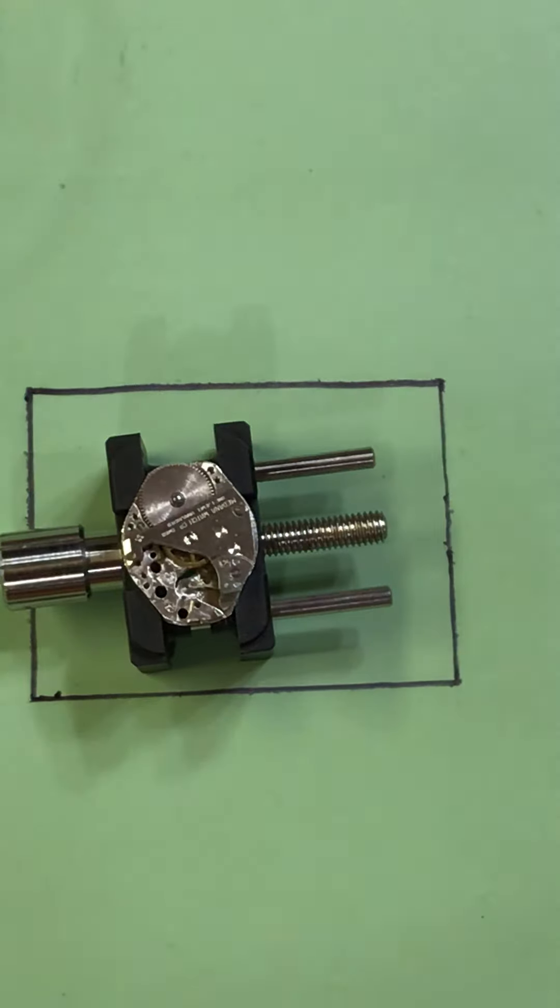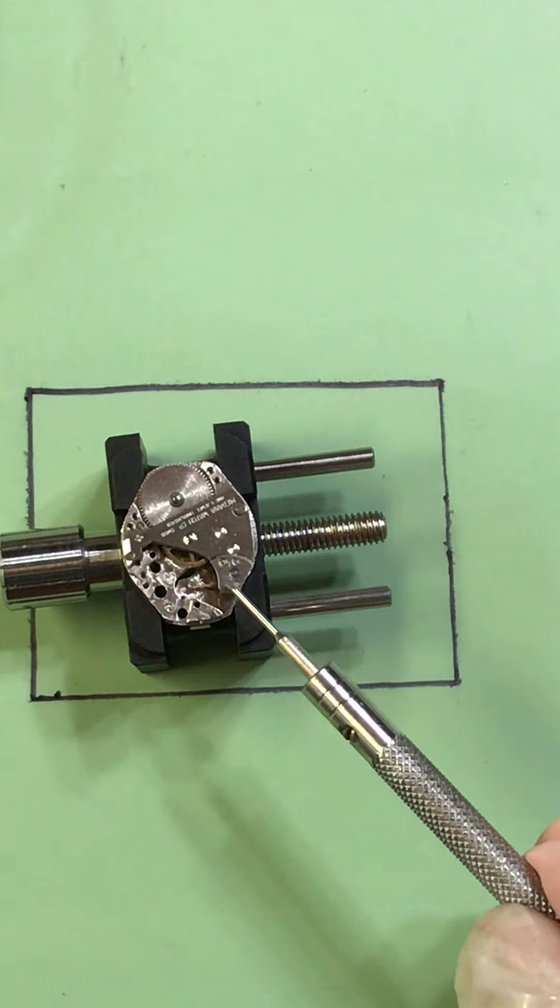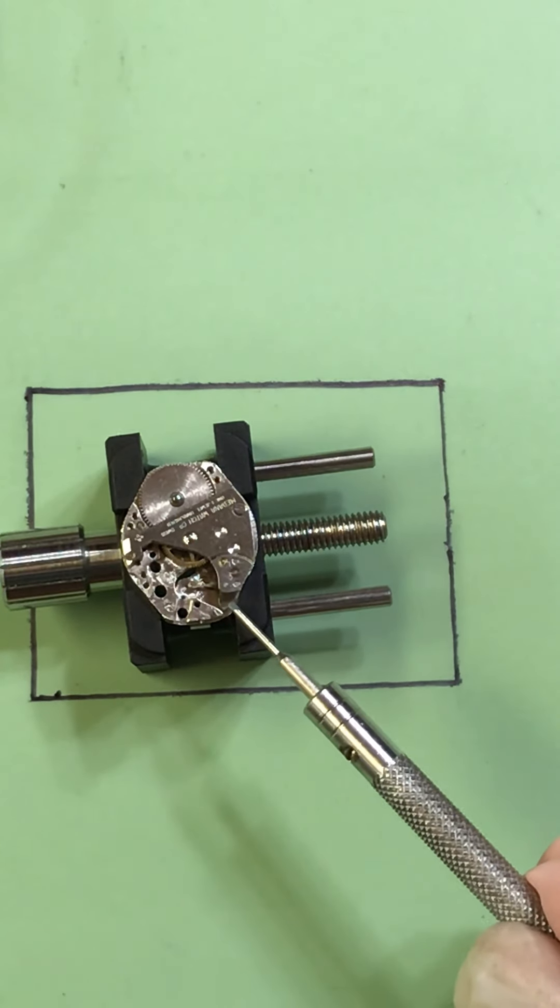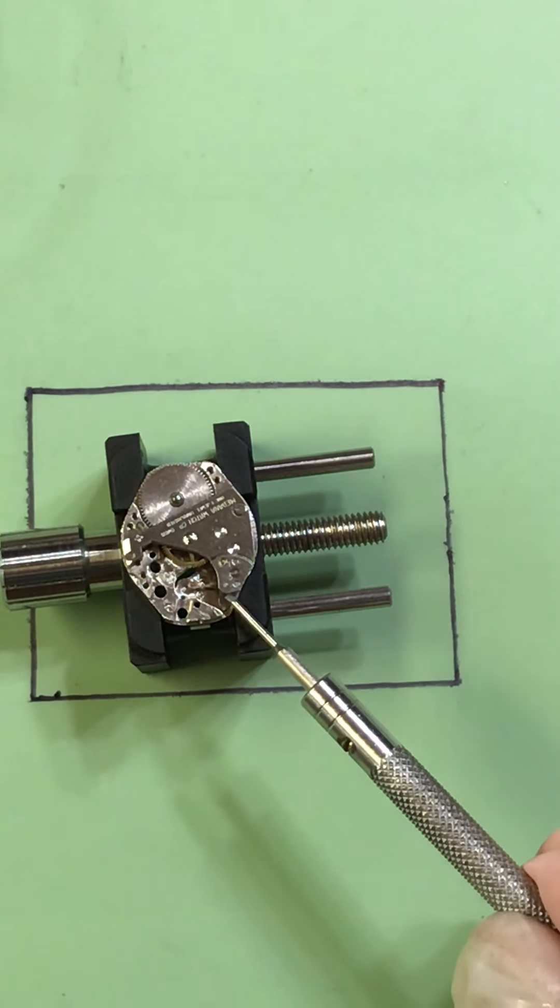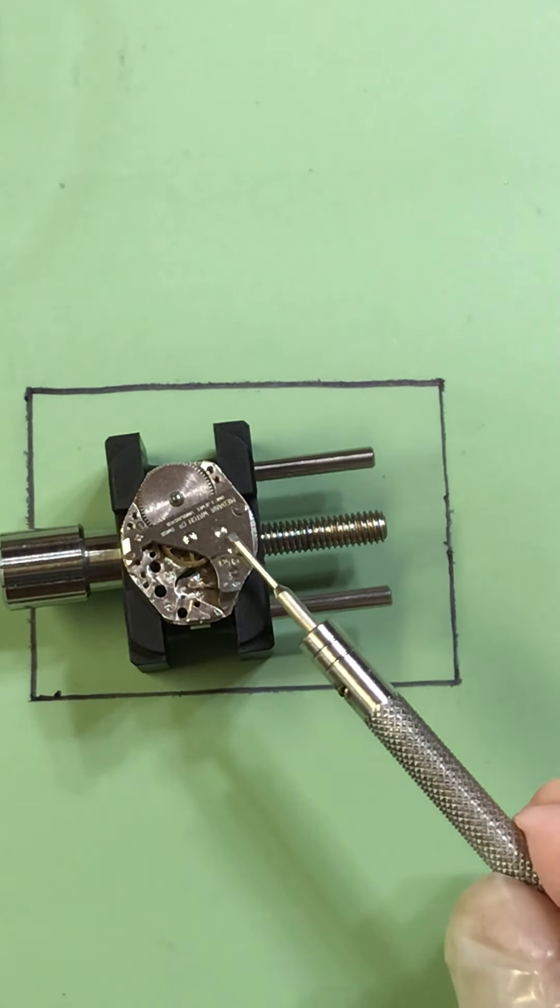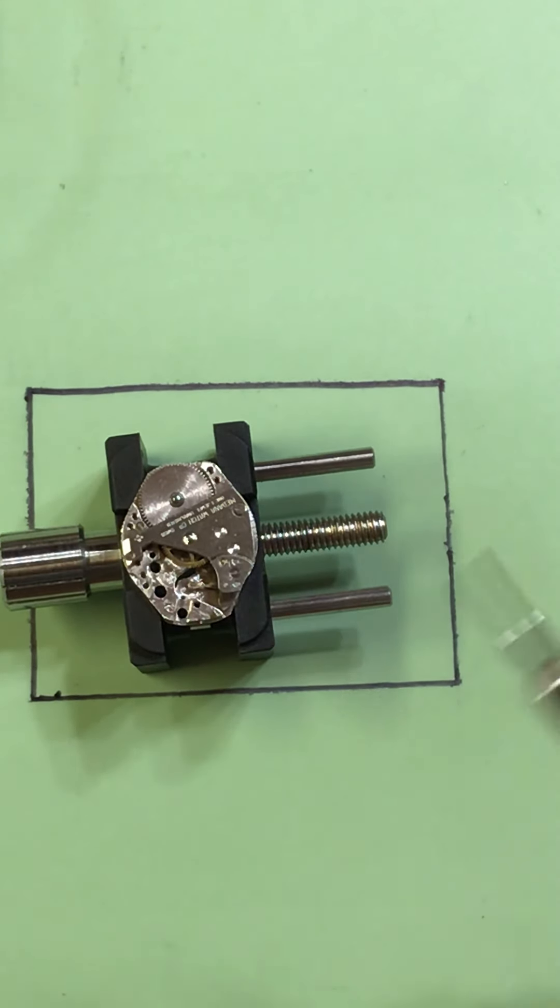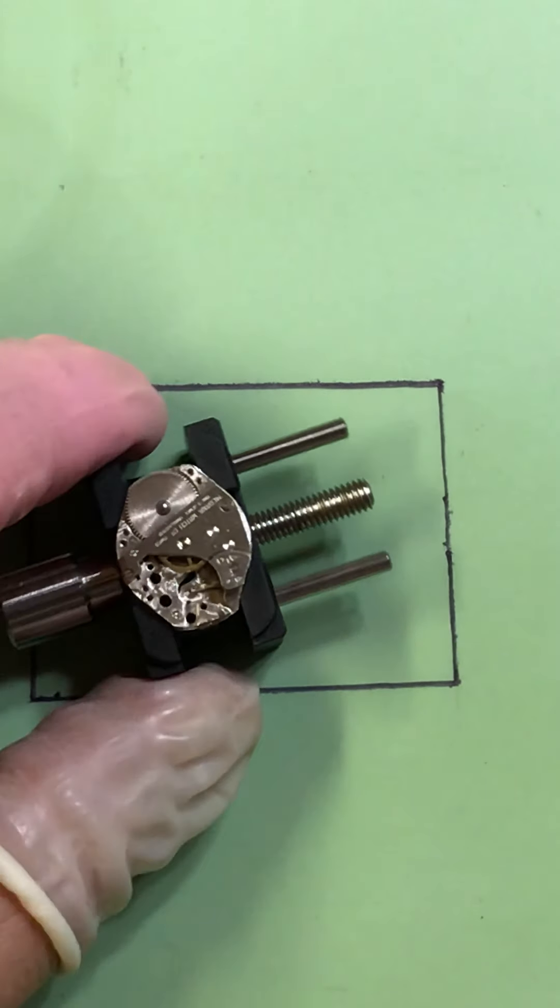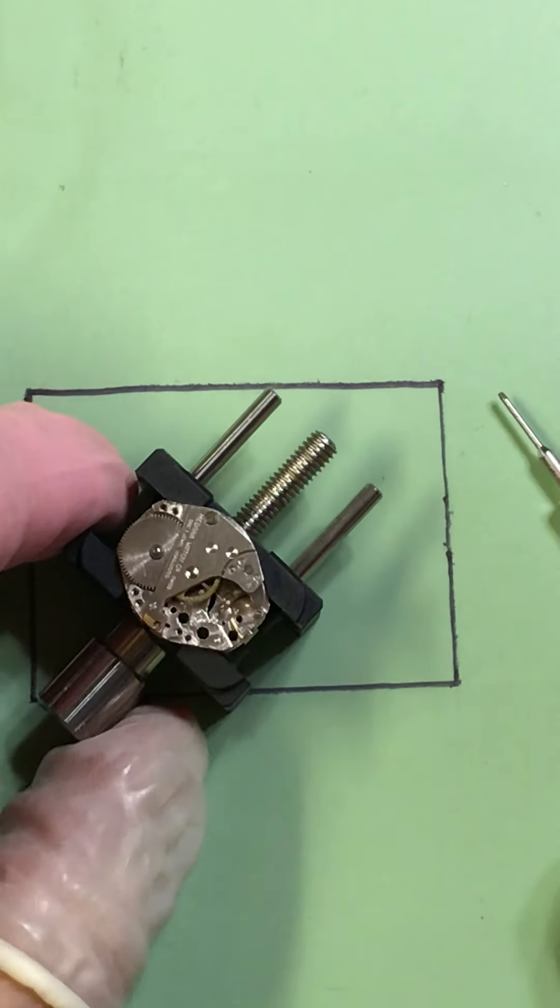I finally figured out why they built this to where this pallet bridge comes off - because you need to be able to put the pallets in last after you set the train wheel bridge. So I may actually remove that bridge again at some point and just make sure all the gears are moving smoothly.